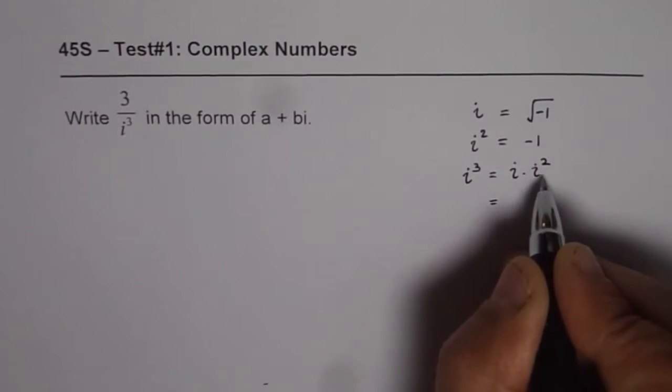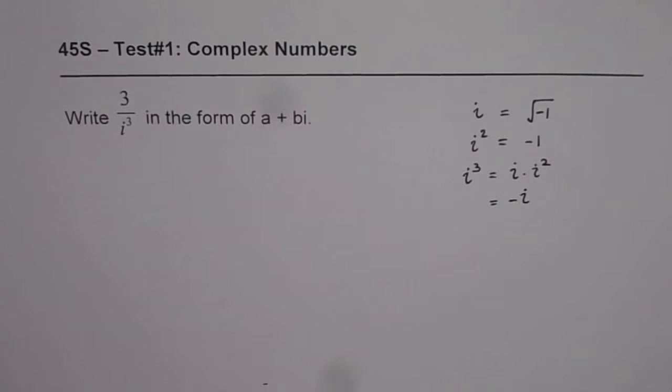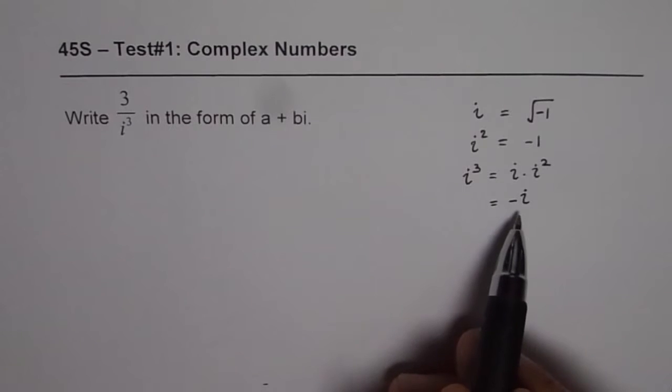So i square is minus 1, it could be written as minus i. So that is how we are going to replace i cube with.